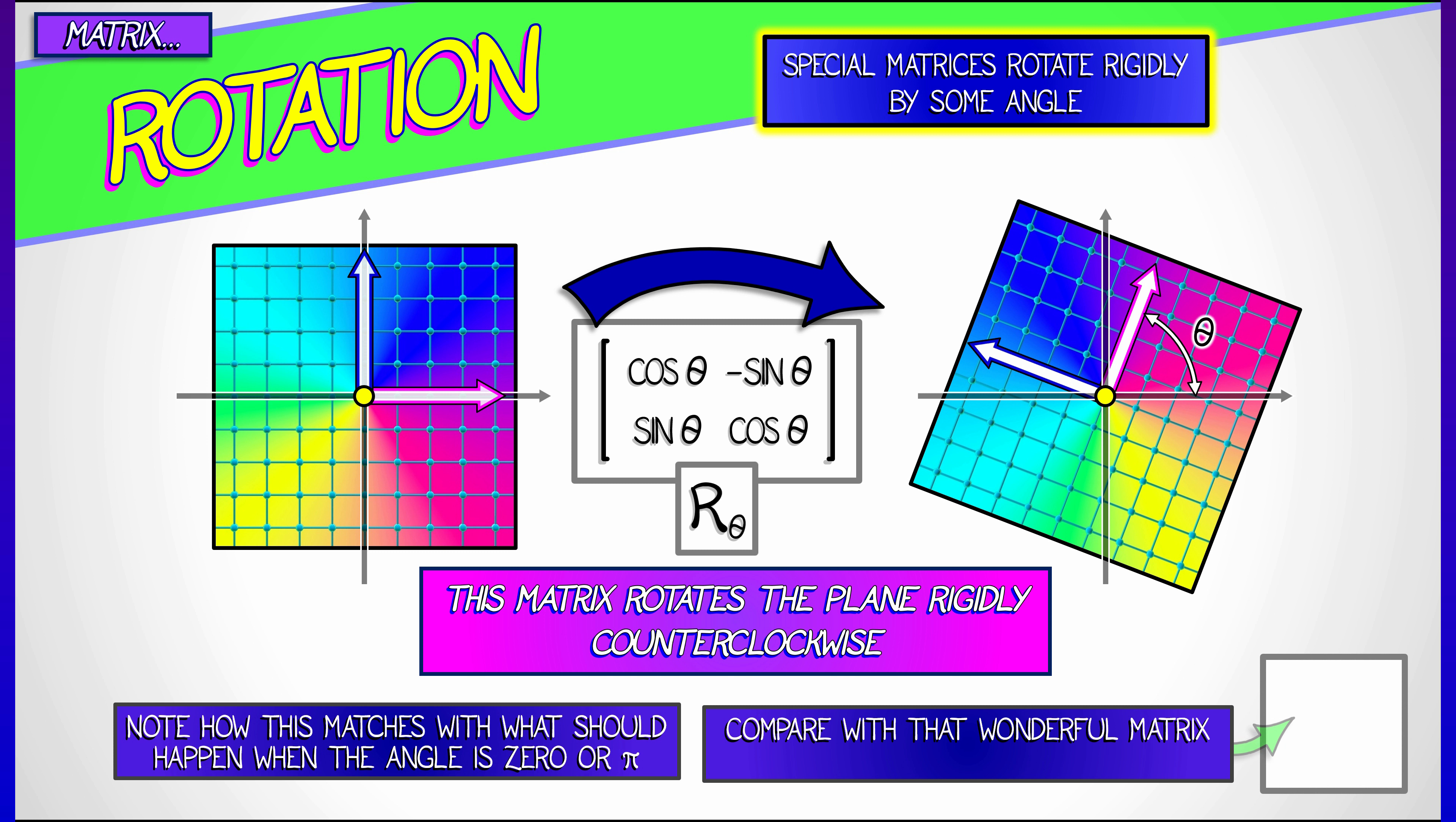Now, notice this does what you think it should do for various special values of theta. And in the particular case of theta equals pi over 2, we recover our friend j, the matrix 0, negative 1, 1, 0. This matrix, which acts like the complex number i, is really rotation by pi over 2 in the counterclockwise direction. This is so cool.